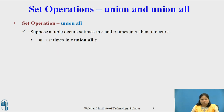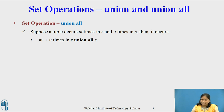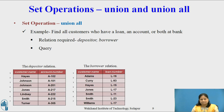Set operation Union All. Suppose a tuple occurs m times in relation r and n times in relation s, then it occurs m plus n times in r Union All s. If Jones has four accounts and three loans at the bank, then there will be seven tuples with the name Jones in the result.